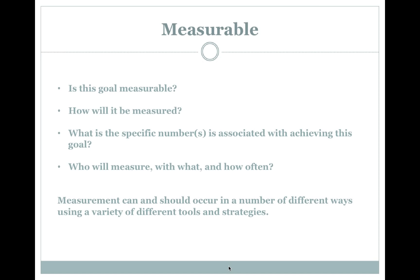Measurable means being able to know whether actions made the kind of difference we wanted. A measurable goal can be measured to see a change in results because of those actions. When checking for measurability, one may ask: Is this goal measurable? How will it be measured? What specific number is associated with achieving this goal? Who will measure it, with what, and how often? Measurement can and should occur in a number of different ways, using a variety of different tools and strategies.